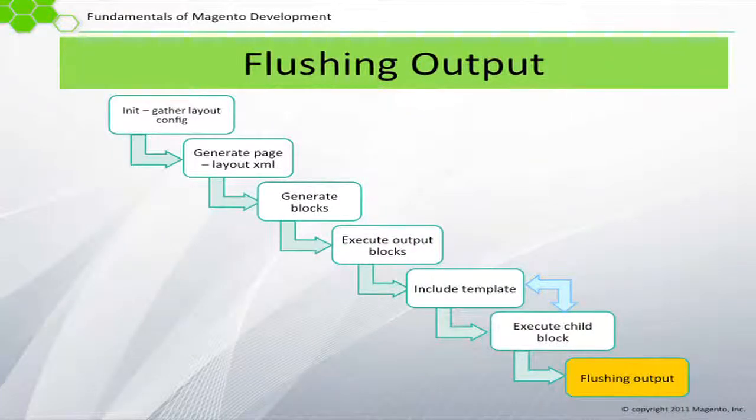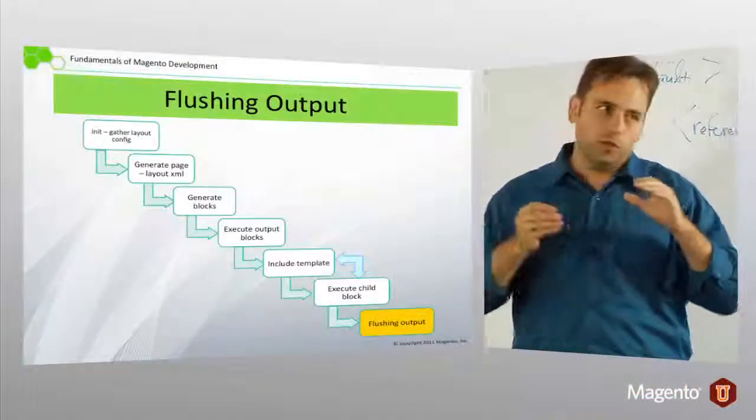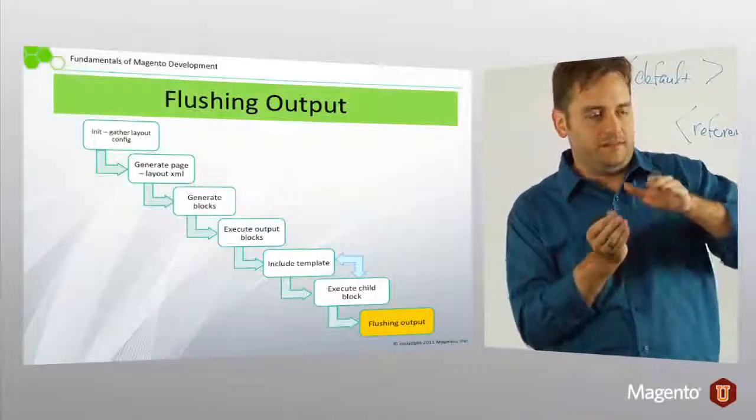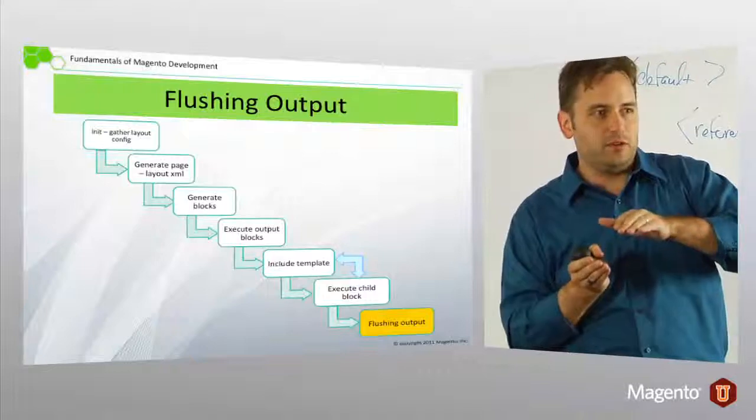Executing the output block, through those get child HTML calls, we recursively get the content for a block, include another class, get its template, and render that view. We keep drilling down.